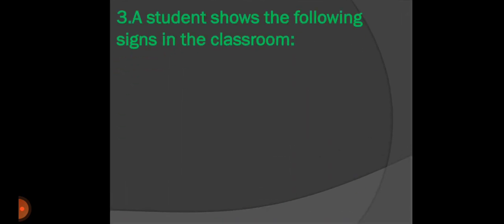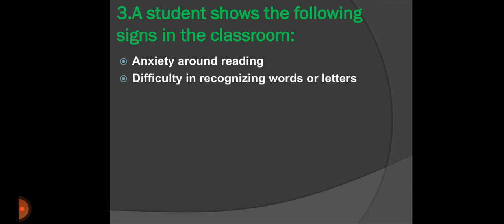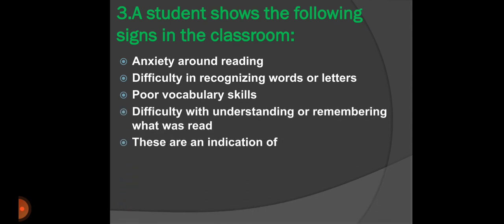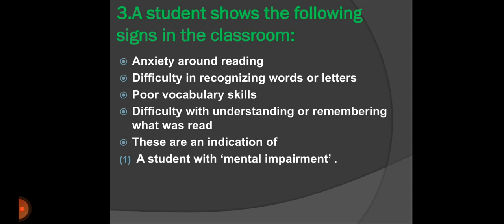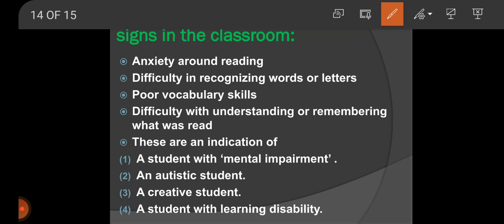And next question. A student shows following signs in the classroom: anxiety around reading, difficulty in recognizing words or letters, poor vocabulary skills, difficulty with understanding or remembering what was read. These are the indication of: option 1, a student with mental impairment. Option 2, an autistic student. Third option, a creative student. And fourth option, a student with learning disability. As we have discussed earlier, the student with learning disability has anxiety around reading, recognizing words, poor vocabulary skills. So the answer would be option 4, a student with learning disability.